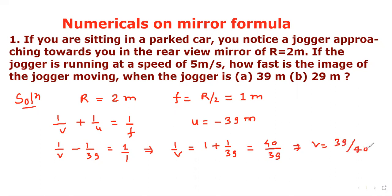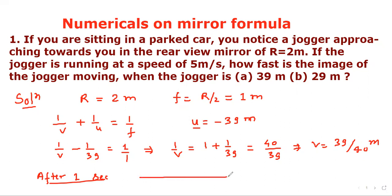The jogger is moving at 5 meters per second, so after 1 second the jogger covers 5 meters. The new object distance becomes 39 − 5 = 34 meters, so new u = −34 meters. We now find the corresponding new image position V dash using the mirror formula.